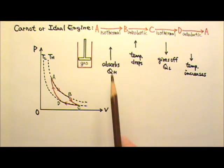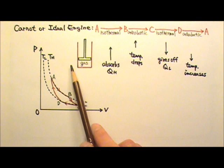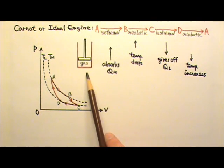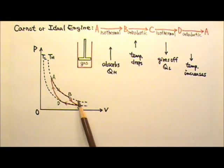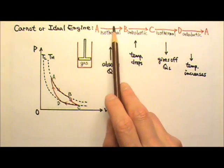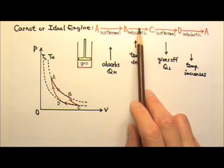From A to B, it's an isothermal process. So the gas cylinder is placed in a heat reservoir with temperature TH. When the gas expands, in order to maintain constant temperature, it has to absorb heat and that's the QH.